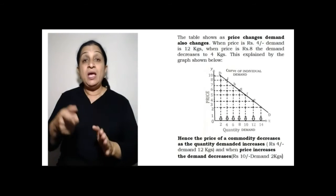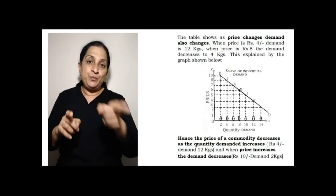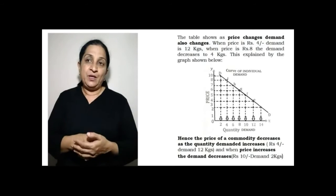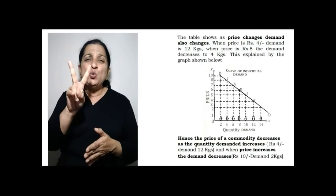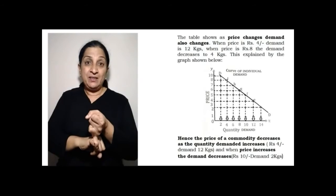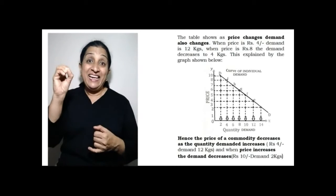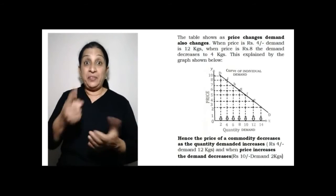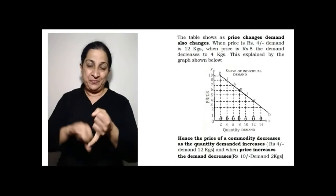You have a graph which shows change of one to another, that is demand with the price. If 2 rupees is the cost, then the demand is 14 kgs. And if you see the last, the price is 10 rupees, then the demand reduces to 2 kgs.